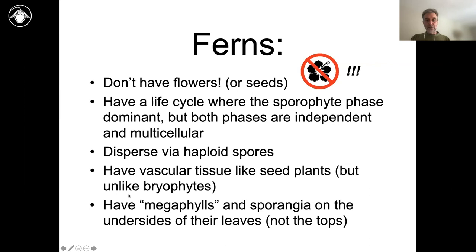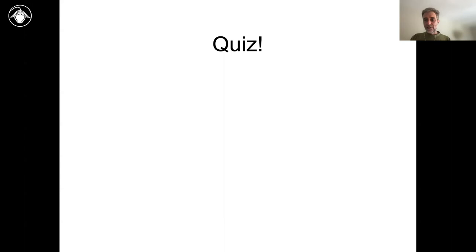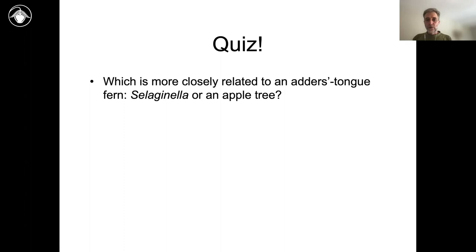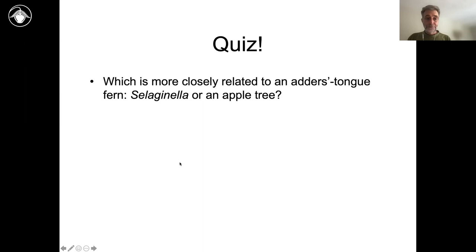So together, those are the biological characteristics that tell us we have a fern. Let's do a very quick quiz to keep everyone on their toes — a silent quiz, so there's no shame, just private glory. What is most closely related to an adder's tongue fern: Selaginella, which is a lycophyte, or an apple tree? I just mentioned that ferns are more closely related to flowering plants than they are to the fern allies. So an adder's tongue fern is more closely related to an apple tree than to Selaginella.